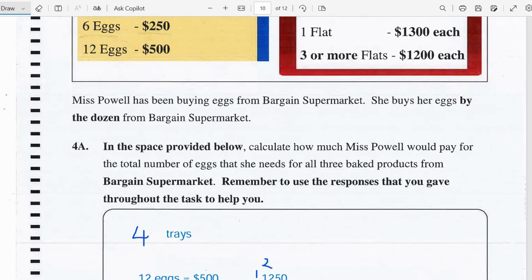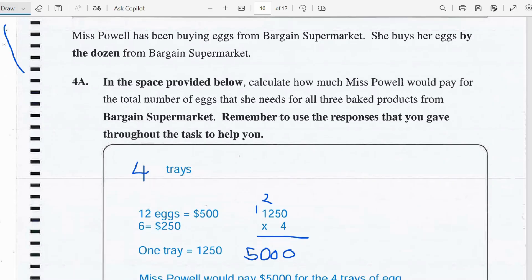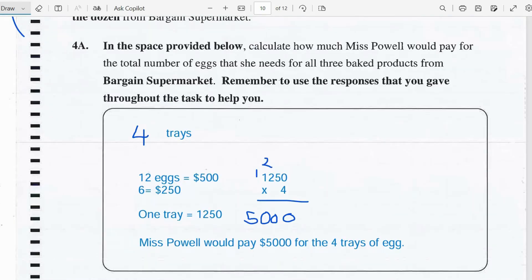Miss Powell has been buying eggs from Bargain Supermarket. She buys her eggs by the dozens from Bargain Supermarket. In the space provided below, calculate how much Miss Powell would need to pay for the total number of eggs that she needs for all 3 baked products from Bargain Supermarket. And remember to use your responses that you gave throughout the task to help you.